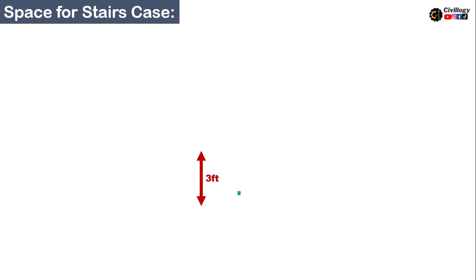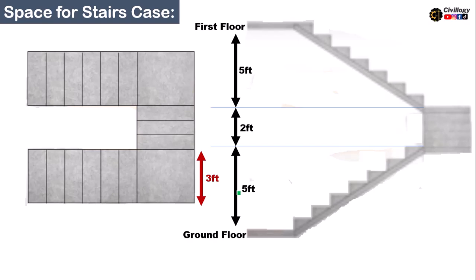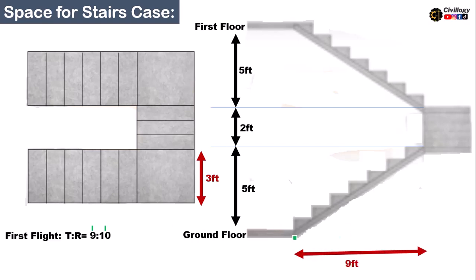Now, the question is the space requirement for the staircase — the space allocated for stairs in any building. As you can see in the plan, this is how a U-shaped staircase looks. We have already calculated that in flight 1 there are 9 treads and 10 risers. The horizontal length of flight 1 is already calculated as 9 feet — 9 treads times 1 foot each equals 9 feet. This length of 9 feet is also shown in the plan.